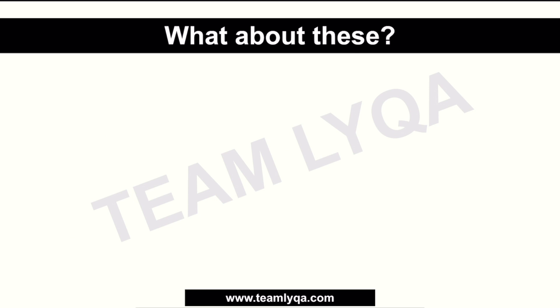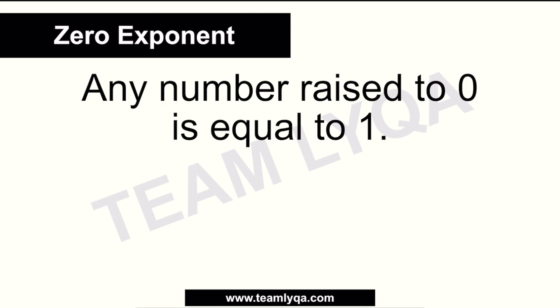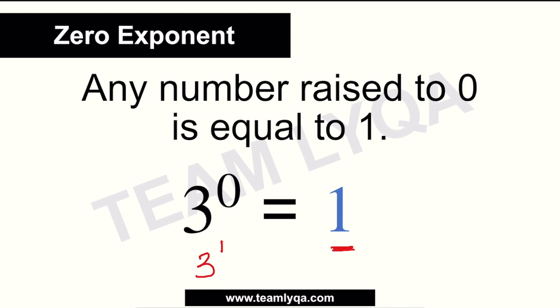Now, what if the exponent is raised to 0? What if it's raised to a negative number, or raised to a fraction? Let's go through them one by one. First, zero. The rule is that for any number, if it's raised to 0, it equals 1. This often comes up in aptitude exams because people forget it. No matter how long the number is — whether it's a 6-digit number or has variables — if it's raised to 0, the answer is 1. For example, 3 raised to 0 is equal to 1. This is something you just need to remember.